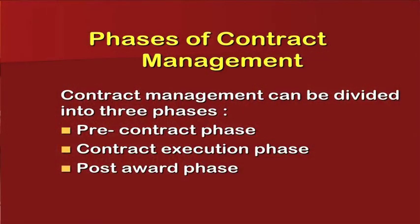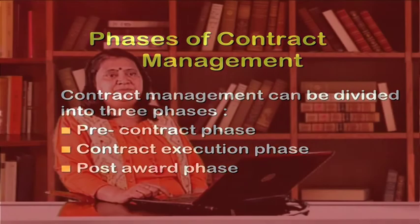Phases of contract management: Contract management can be divided into three phases - pre-contract phase, contract execution phase and post-award phase. The pre-contract phase is the preparation, drawing an outline, searching for specifications of products and services. Contract execution is to draft, design and negotiate. Post-award phase is documentation, distribution and compliances.